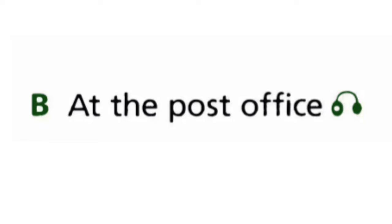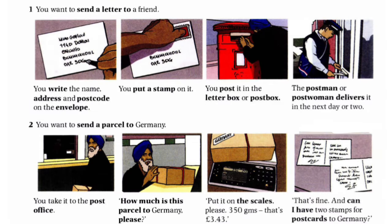This unit has another part — part B — which is about at the post office. We have some pictures here and some new vocabularies. You want to send a letter to a friend. You write a name, address, and postcode on the envelope. You put a stamp on it. You post it in the letterbox or postbox. The postman or postwoman delivers it the next day or two. New vocabularies: address, postcode, envelope, stamp, post, letterbox, postbox, postman, postwoman, and deliver.